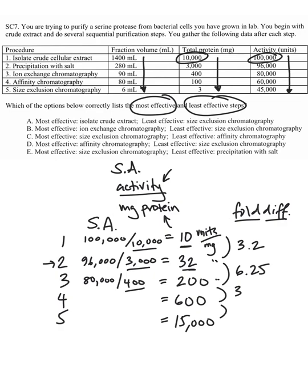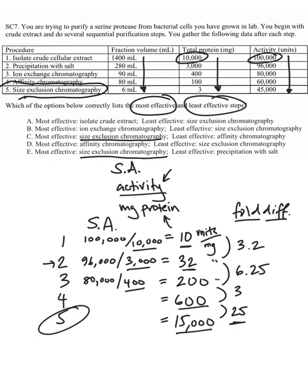And 15,000 divided by 600 is a 25-fold increase. So the step that allowed the biggest fold increase in specific activity — the biggest increase in enzyme relative to total protein — is step five, where you went from 600 to 15,000 by a factor of 25. So the most effective step is step five: size exclusion chromatography.